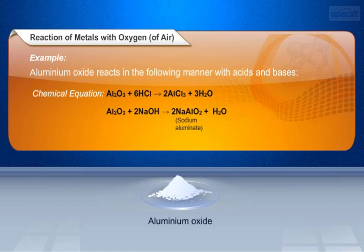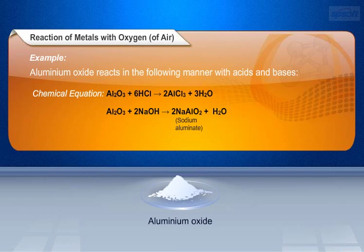Now let us see Aluminium Oxide's reaction with base. One molecule of Aluminium Oxide, Al2O3, and two molecules of Sodium Hydroxide, 2NaOH, combine to form two molecules of Sodium Aluminate, 2NaAlO2, and one molecule of water, H2O, is released.